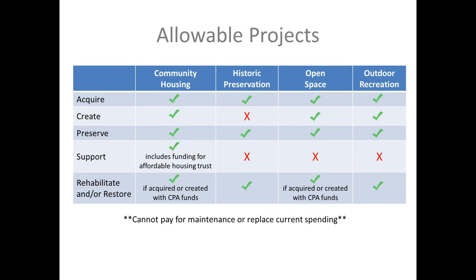The law is very specific on what we can and cannot do with these funds in each of the four categories. We can use it to acquire new community housing, create community housing, preserve it, and protect it from harm. Affordable housing is the only category where we can support rehabilitation or renovation.